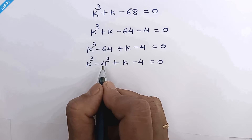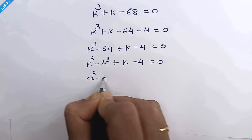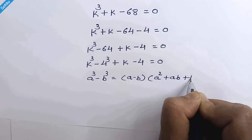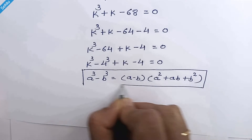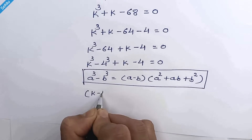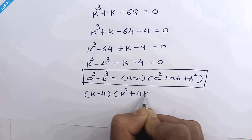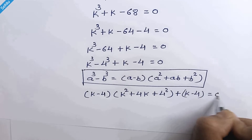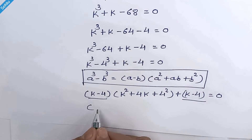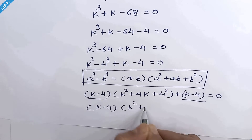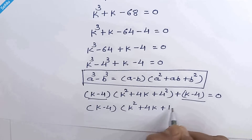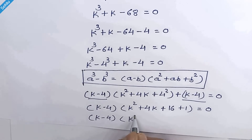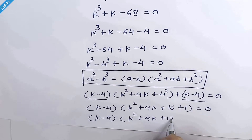Let's recall an identity: if we have a cubed minus b cubed, then it can be a minus b times a squared plus ab plus b squared. So k cubed minus 4 cubed can be written as k minus 4 times k squared plus 4k plus 16, and here we also have k minus 4.